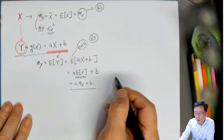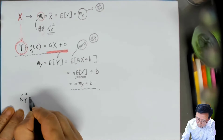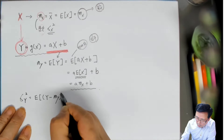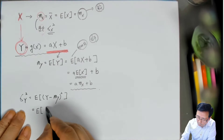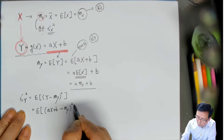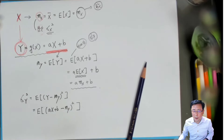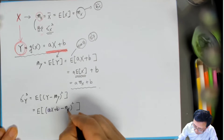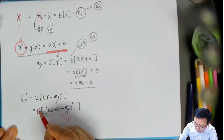이 기호를 여러분들이 잘 이해하셔야 됩니다. 그 다음 분산, variance는 정의는 random variable y의 배리언스는 E[(y - my)²]입니다. 이게 배리언스거든요. 그러면 이것을 대입해 보는 거죠. y를 대입하는 거죠. y는 ax + b이고, (ax + b - my)² 이렇게 되는 거죠. 그런데 여기에서 이 값들은 전부 다 실수이기 때문에, 더 이상 기댓값에 구속받지 않고 바깥으로 나올 수 있는 거죠.